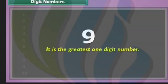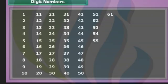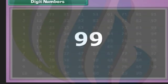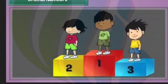The last one-digit number is nine. It is the greatest one-digit number. The first two-digit number is ten. It is the smallest two-digit number. The last two-digit number is ninety-nine. It is the greatest two-digit number.